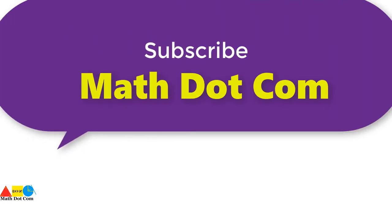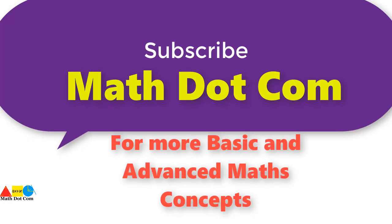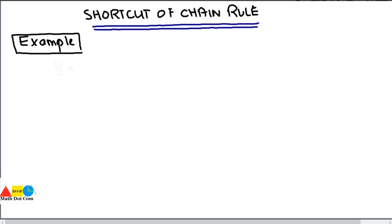If you are visiting our channel for the first time, please subscribe to get basic and advanced math concepts. Today I am going to give you a very interesting shortcut method to find the derivative of composite functions. Composite functions can be found by the chain rule, but they can also be found by another method that is a shortcut compared to the chain rule.